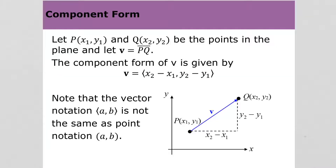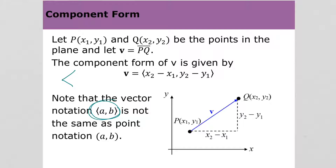Continuing with vectors – the component form of a vector – so there's component form and rectangular form of a vector. The component form kind of looks like a point, but it's not. So with a vector, you have an initial point and a terminal point. To write a component form, we write it like this – it's got some kind of parenthesis-looking type of thing, but with a point in it. That is the vector notation.